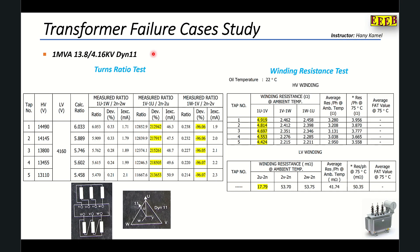Our test subject is a 1MVA transformer, 7.8 over 4.15 kV, vector group DYN-LF. Now we are performing a turns ratio test. This shows the 5 taps on the HV side, the voltage as per the transformer nameplate, and this is the LV voltage. Here is the calculated ratio at each tap. The measured ratio shown is between 1U1W and 2N2W.